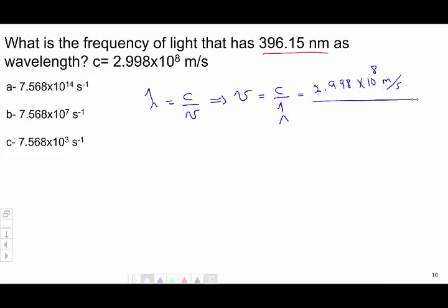The wavelength is in nanometers while the unit of the speed of light is in meters, so I know that I have to change the nanometers into meters. 396.15 nanometers times 10 to the power minus 9 meters. This is the conversion factor. This will cancel, meter will cancel meters. The frequency will be in seconds minus one.